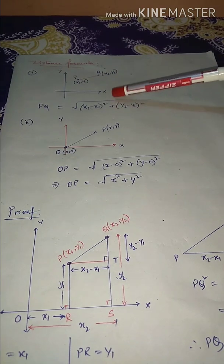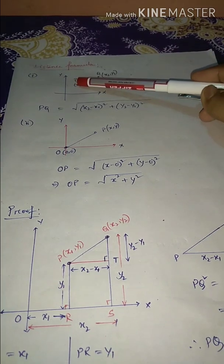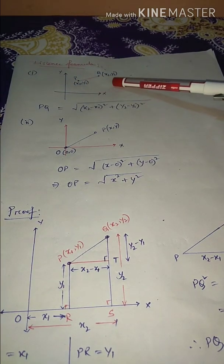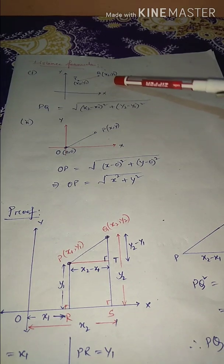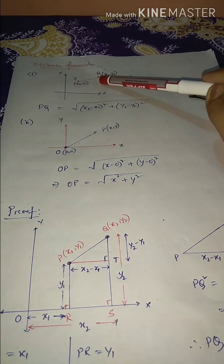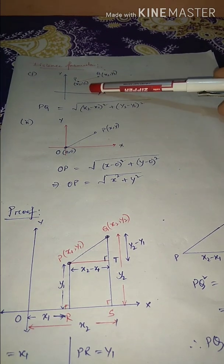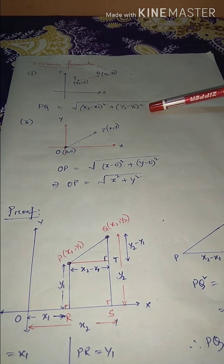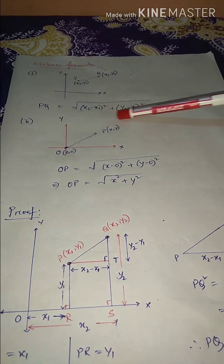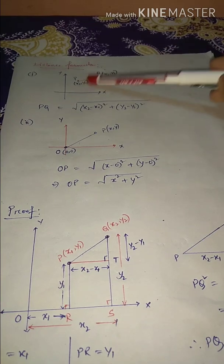In the XY plane, we consider two points: P with coordinate (X₁, Y₁) and Q with coordinate (X₂, Y₂). We need to find the distance between these two points. The formula is: PQ = √[(X₂ − X₁)² + (Y₂ − Y₁)²]. This is the general distance formula between two points.